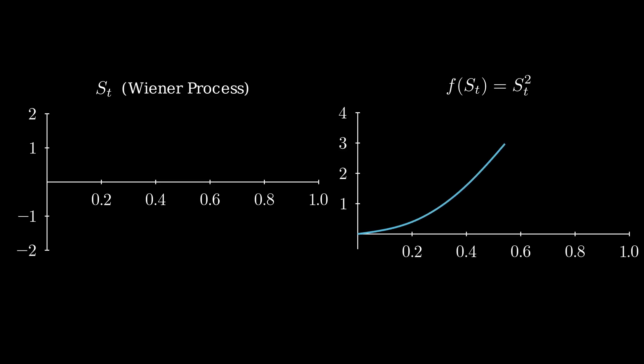Imagine a function f(s) = s². If s is 0, its value is 0, and the tangent suggests small changes in s keep it near 0. In a world without randomness, if s stays at 0, f(s) stays at 0 too — simple enough. But in finance, s is random, like a Wiener process. Watch how it wiggles, and see what happens to f(s).